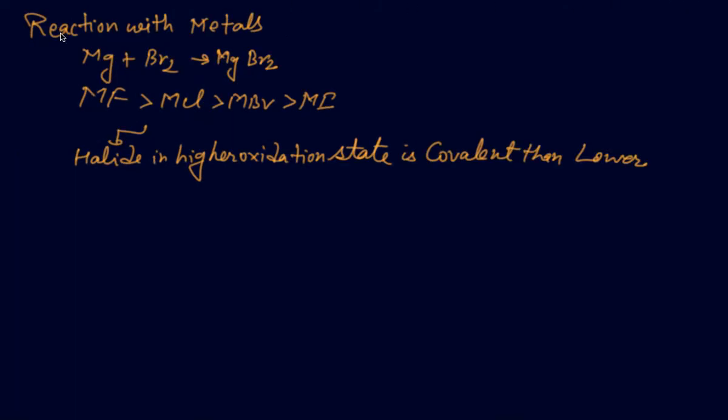Reaction with metals: Halogens react with metals to form metal halides. For example, Mg + Br2 → MgBr2. Their ionic character decreases in the order: F > Cl > Br > I.